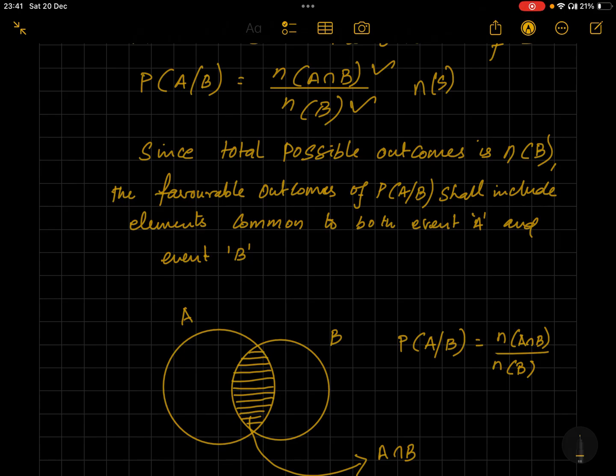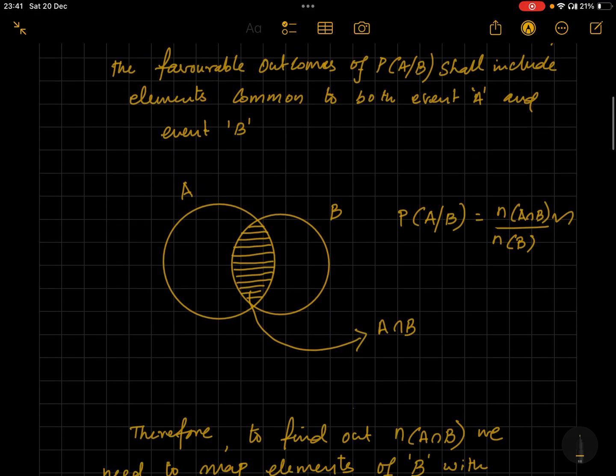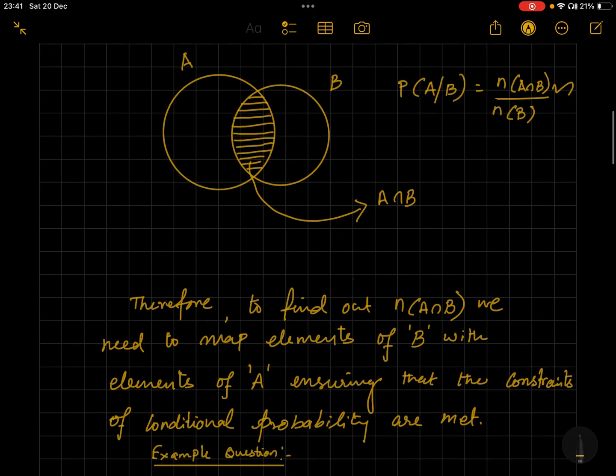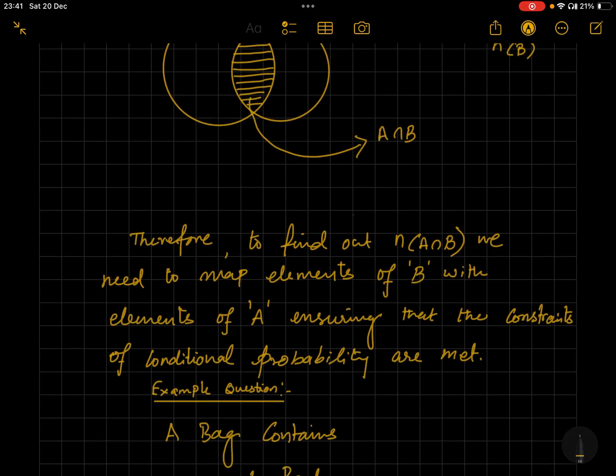To satisfy A as well as B, therefore n(A∩B) is taken as the formula for defining the favorable outcomes. Therefore this formula has come: n(A∩B) by n(B). It's a pictorial representation. To find n(A∩B), you have to map the elements of B with the elements of A.